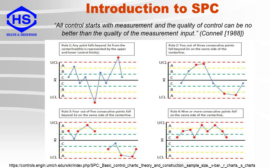Here is a short introduction to statistical process control, or SPC. As stated by Connell, all control starts with the measurement, and the quality of control can be no better than the quality of the measurement input. SPC uses control charts and rules. The upper and lower control limits, UCL and LCL, are related to the one standard deviation errors, and the control set point is the X-bar. Rule number one: if the last measurement result is more than three standard deviations from the set point, then the process has a high probability that it is heading in that direction. Rule number two: if the last two out of three measurement results are more than one standard deviation from the set point, then the process also has a high probability that it is heading in that direction.